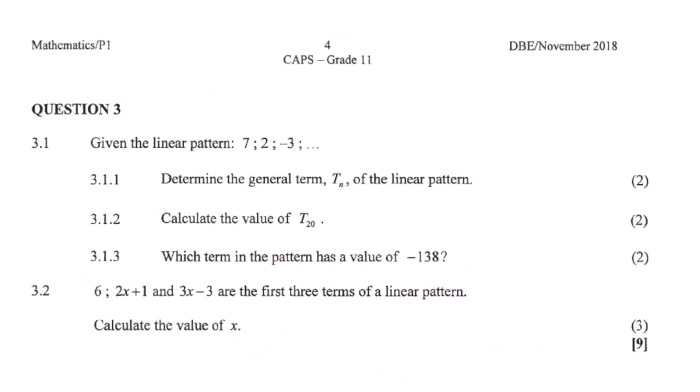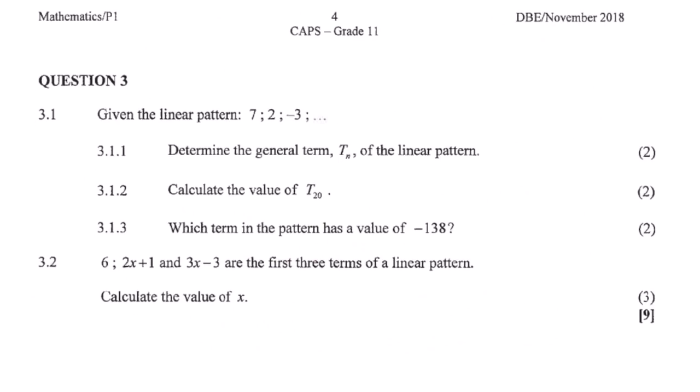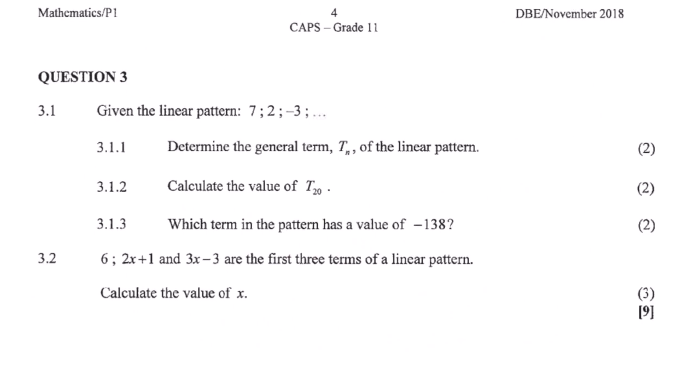This is the actual question paper — we can see that it's November 2018 question 3. We are given a linear pattern. The question says: given the linear pattern 7, 2, negative 3 — 3.1.1: determine the general term Tn of the linear pattern.